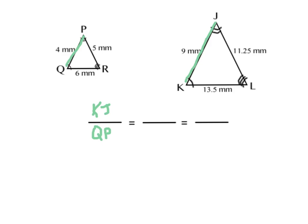Because I started with the large triangle, I'll again start with the large triangle on the next side. We're going to look at side JL, which corresponds with side PR. To be consistent, we will start with our large triangle again with our last side, which is side LK, which will correspond with side RQ.